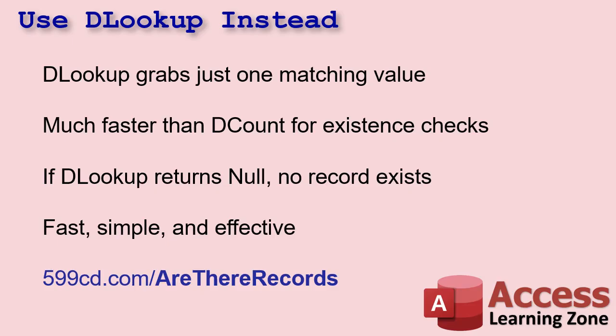I used to do it all the time — like, do I have any emails from this customer? So I would DCOUNT it and look for a zero. But it's got to go out and count all of the emails first just to tell me whether or not they have any emails in the system. So if you just want to know if something exists, use DLOOKUP instead. Try to pull a single field — any field. I like to pull the IDs. Check if the result is null or not with an NZ. If it returns anything, then a record exists. That's it — way faster. In some cases it can be twice as fast or more.